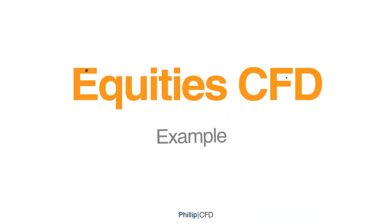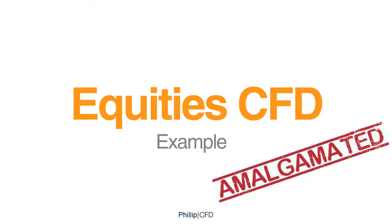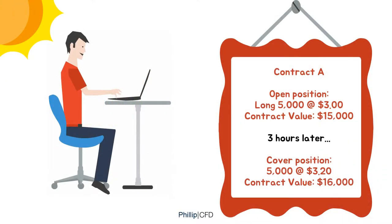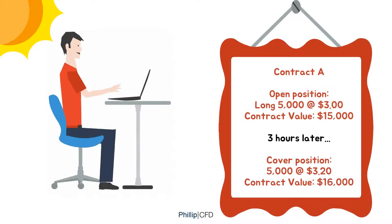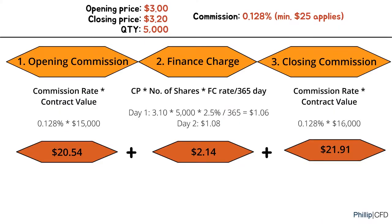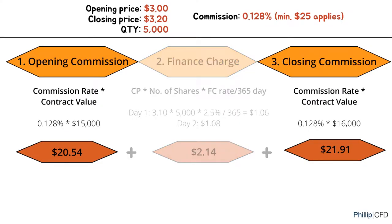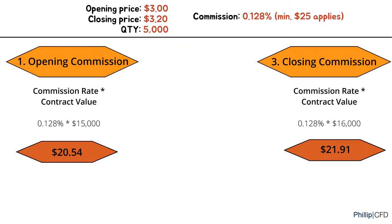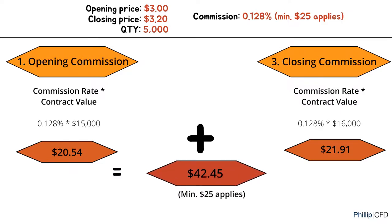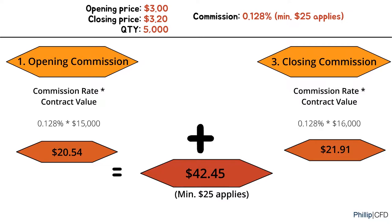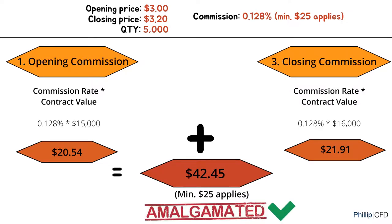Here is an example of an intraday equity CFD trade. Using the same example previously, only that you covered your outstanding position 3 hours later. In this case, there will still be opening and closing commission, but no finance charge because you did not hold your position to the next trading day. The total commission will be $20.54 plus $21.91, amounting to $42.45. Without amalgamation, you would have to pay the minimum commission twice for both your buy and sell trade, amounting to $53.50.